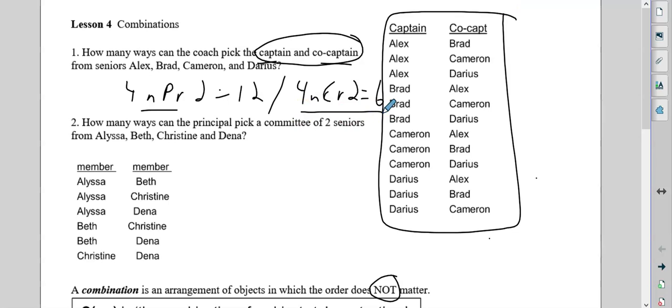Now, on number two, it says a principal is picking two seniors from four people. It's just two people. There's no ranking. There's no you're better than me, you're in charge and I'm helping you. It's just equal. So in this case, it would be four NCR two, which would give you six.